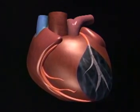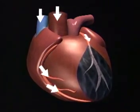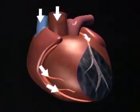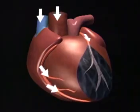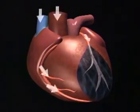A suggested mechanism of action for this chronic effect is that the increased coronary perfusion that results from the retrograde blood flow produced by EECP favors the development of collateral vascularization.